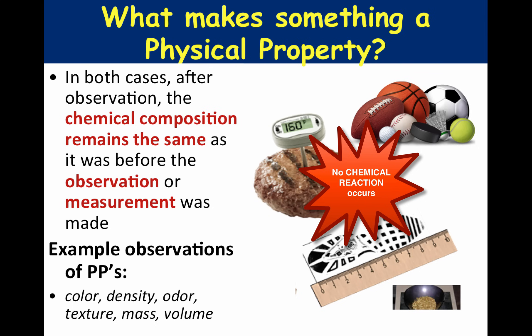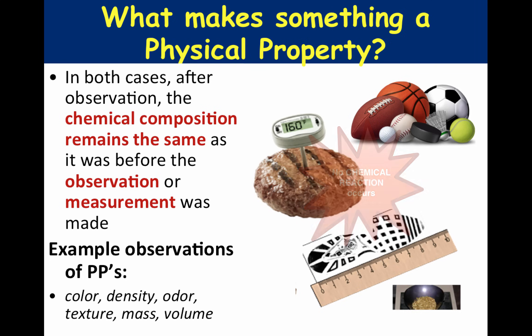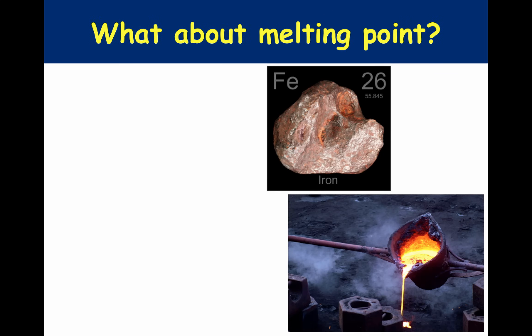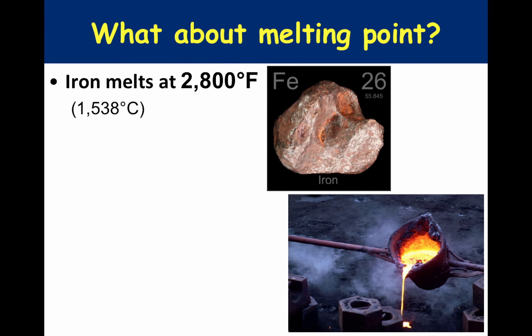Basically anything you are measuring or observing with your five senses is a physical property. Now, what about the melting point of an object — is that a physical property? Let's take iron for instance. Iron comes out of the ground as a solid, but in manufacturing we smelt the iron, meaning we induce a phase change from solid to liquid through the addition of heat.